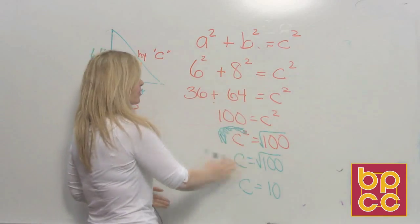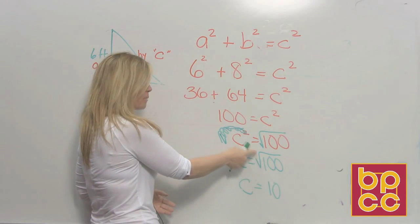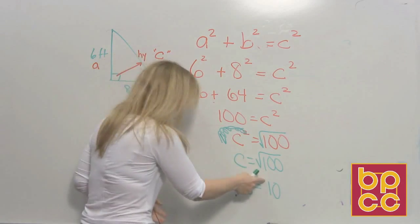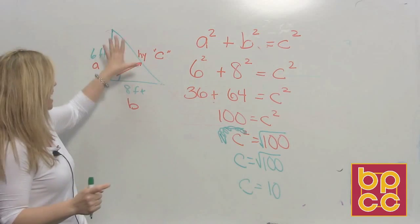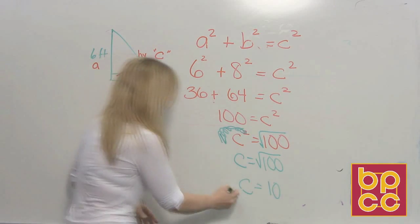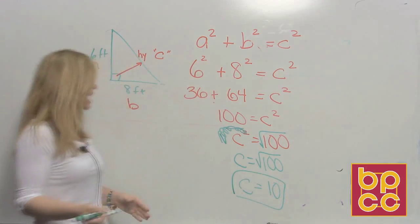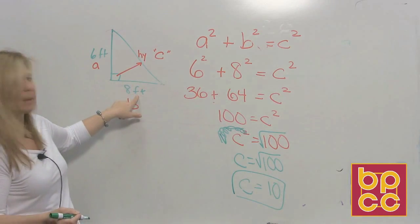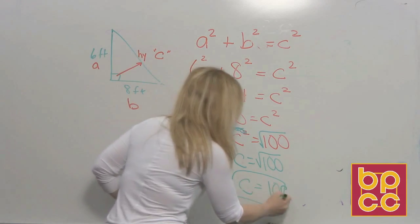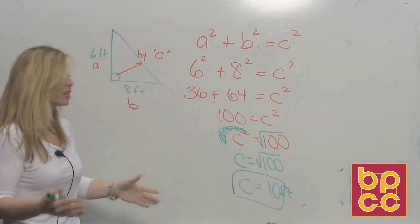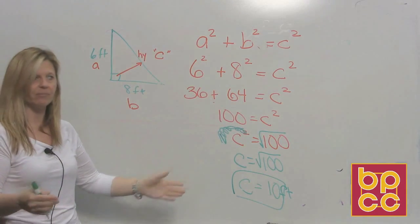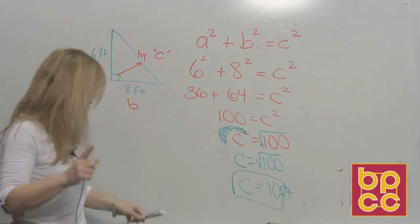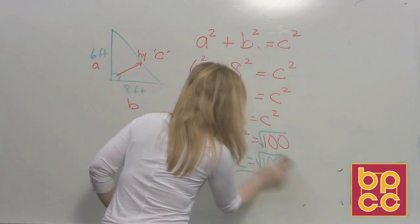So when we work Pythagorean theorem, we don't put the plus or minus here because we know the answer's got to be positive because we're talking about a length of a side. And that side is 10 feet. And that's an application of the square root method. Okay. Let's try one more example out of our notes.